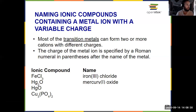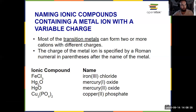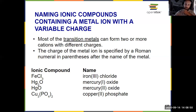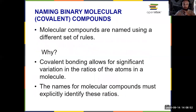There are two more examples for you to pause the video and practice, with answers to follow. So those are all the rules for binary ionic compounds: know if it's a plain ionic compound, know if it has a polyatomic, and know if it has a transition metal — those are the two special situations.